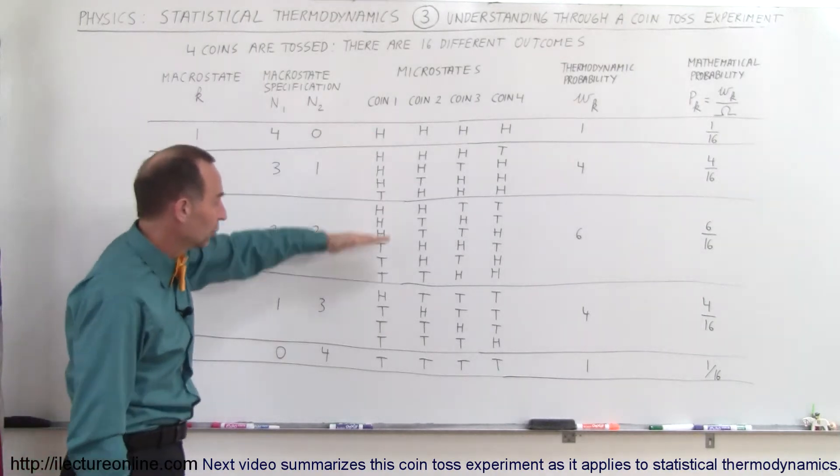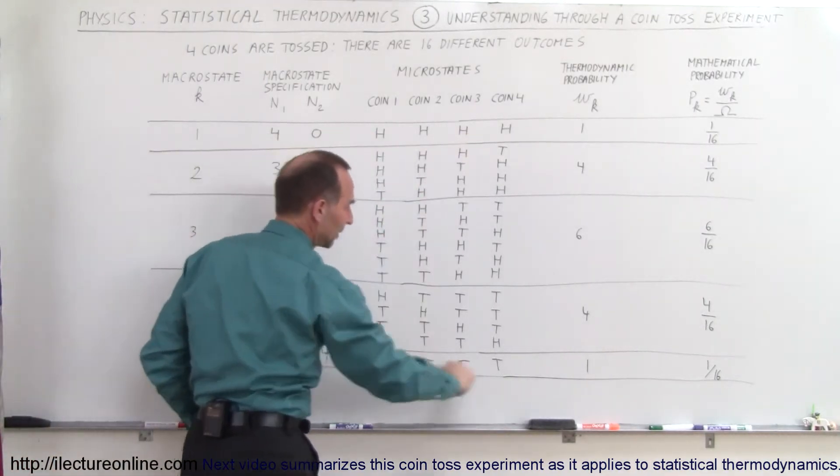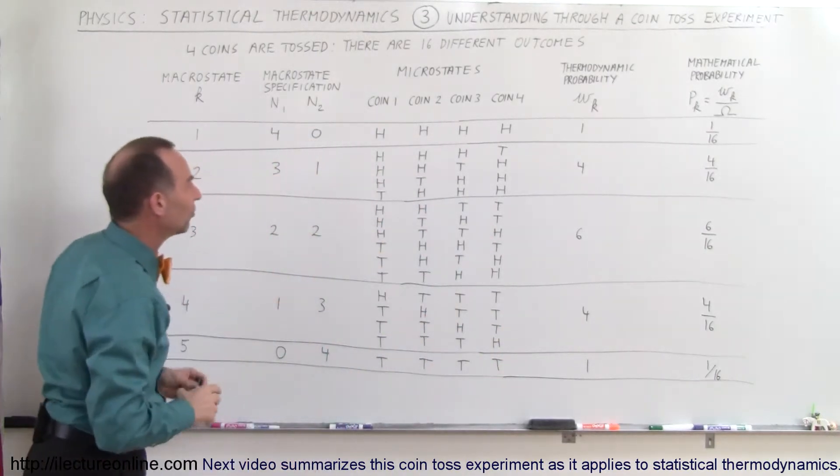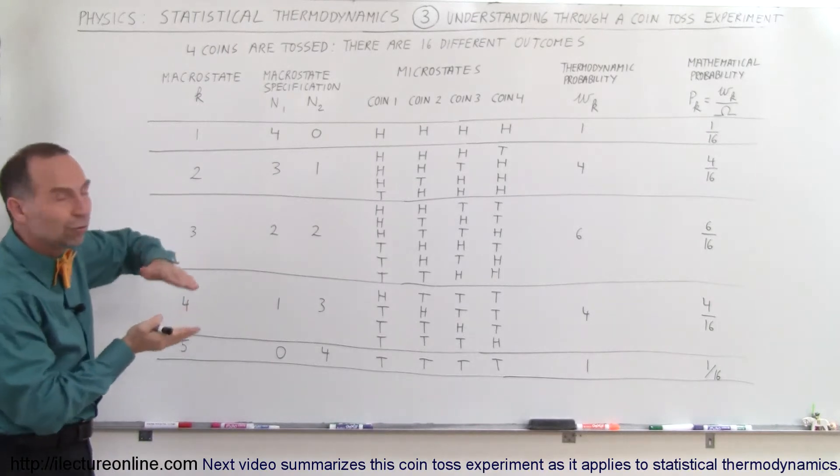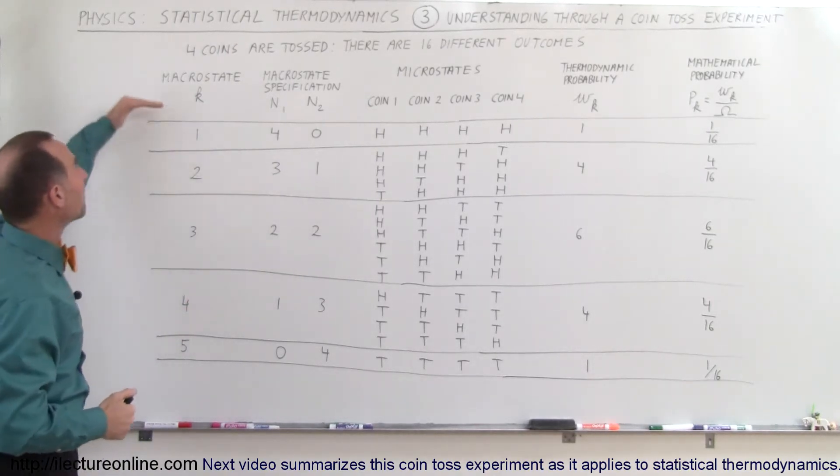The 16 outcomes are notated right here. Notice they could all come up heads, they can all come up tails, or there can be some combination. In this case, we have divided into five different groups. Each of those groups represents a macro state.